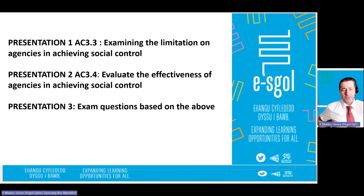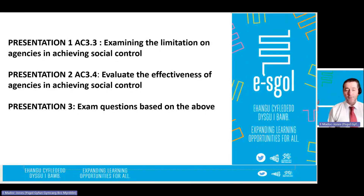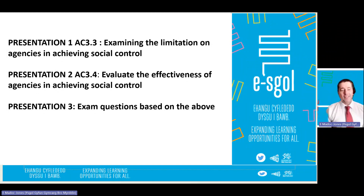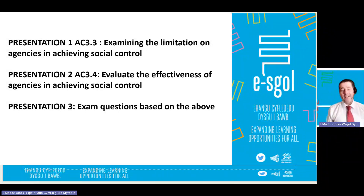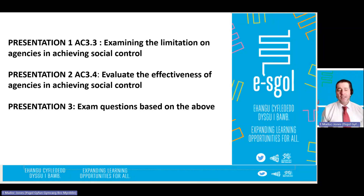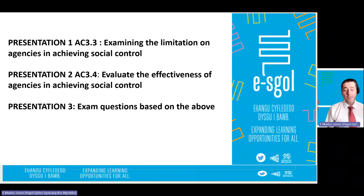This is following on from that, which is more about describing what they do. Now as you can see on the screen, 3.3 is about examining the limitations on agencies in achieving social control, and that will be the focus of my presentation for you today. In the second session I will be evaluating the effectiveness of agencies in achieving social control — looking at their strengths, what they do effectively, and areas where they have been criticised. Finally in the last session, I will be looking at exam questions about 3.3 and 3.4.